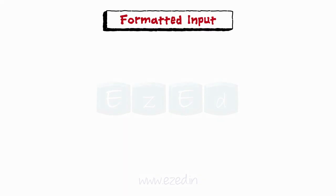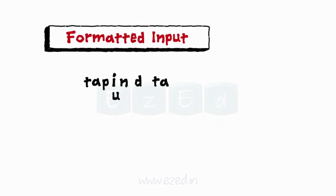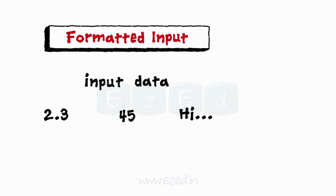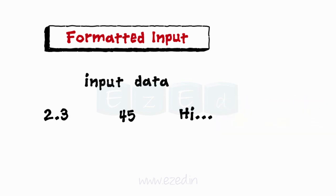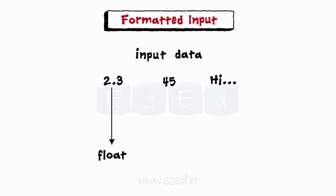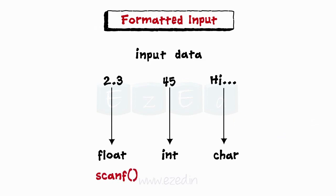Moving on to formatted input: it basically refers to arranging the input data in a particular format. If we want this as input, then this line consists of three pieces of information arranged in a format. So while reading, we need to follow the same format: 2.3 needs to be read as float, 45 as integer, and 'high' as char. This is possible in C using the scanf function, which stands for scan formatted.